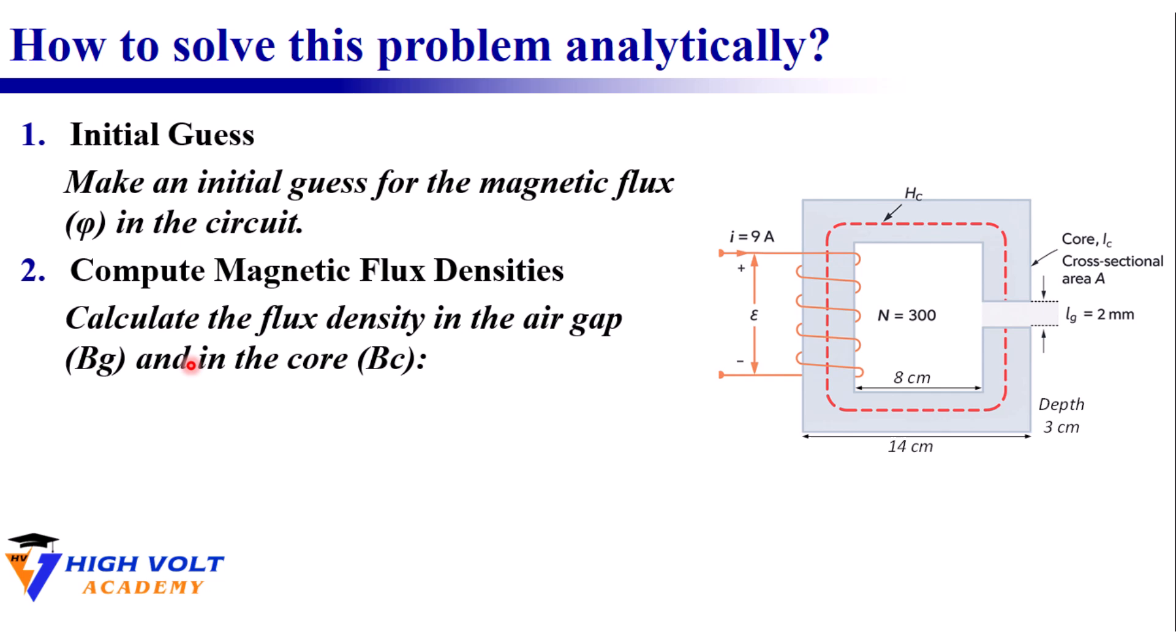Then we compute the magnetic flux densities Bg and Bc which represent flux densities in the air gap and in the core. For the core we divide the estimated flux by the cross-sectional area. However, to account for the fringing effect around the air gap we slightly enlarge the effective area.